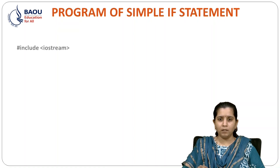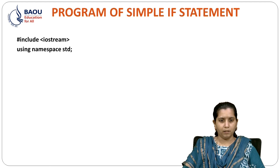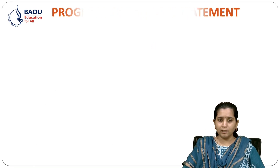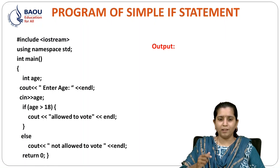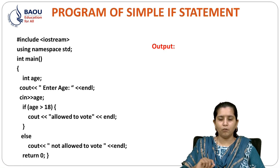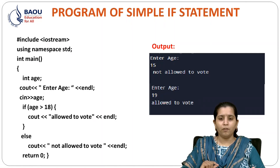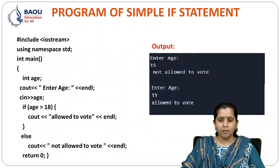Now let's see one simple program of IF ELSE statement. We have taken int age and will ask the user to enter his age. If his age is greater than 18, then the output will be 'allowed to vote'; otherwise, in the ELSE block, it will show 'not allowed to vote.' When I enter 15, then the ELSE block will be executed — 'not allowed to vote.' And when I enter 19, then the IF block is executed, so we will get 'allowed to vote' in our output.